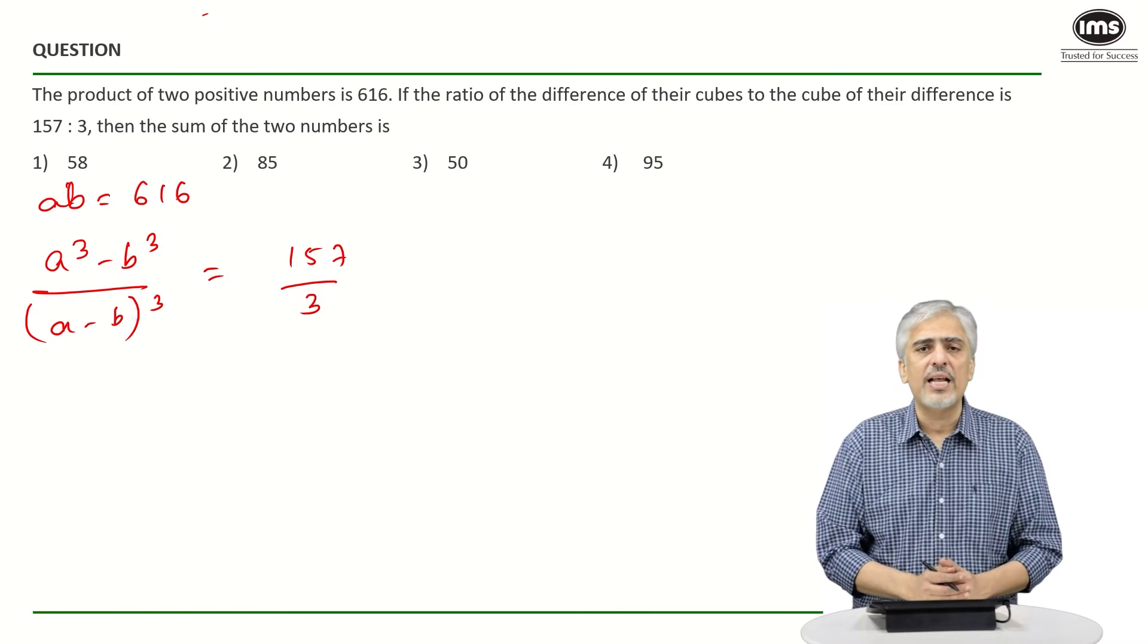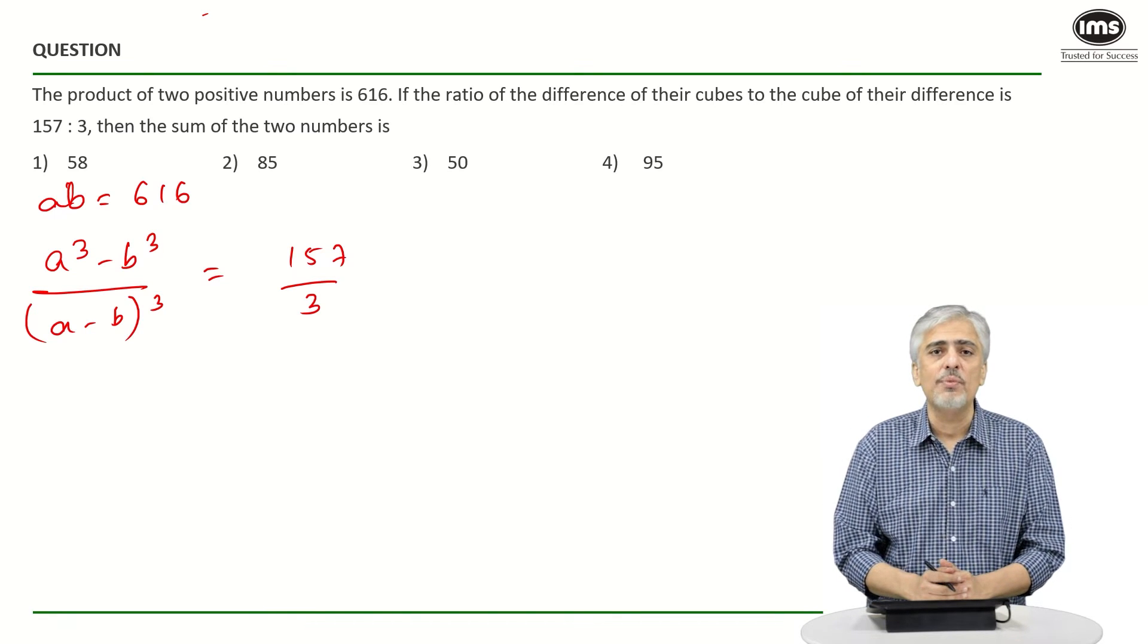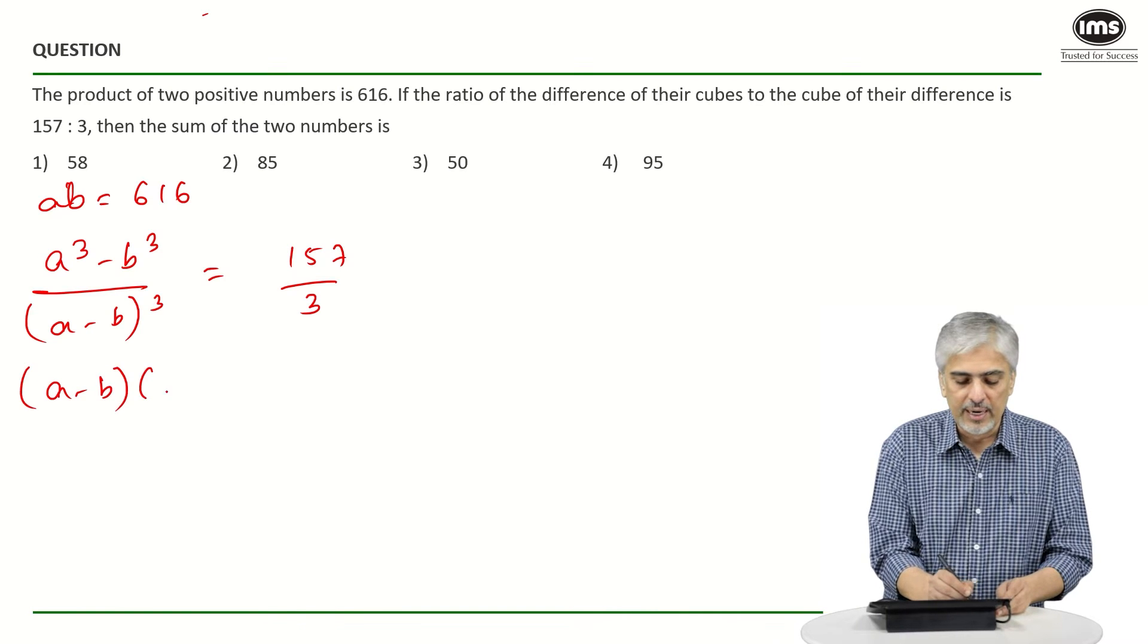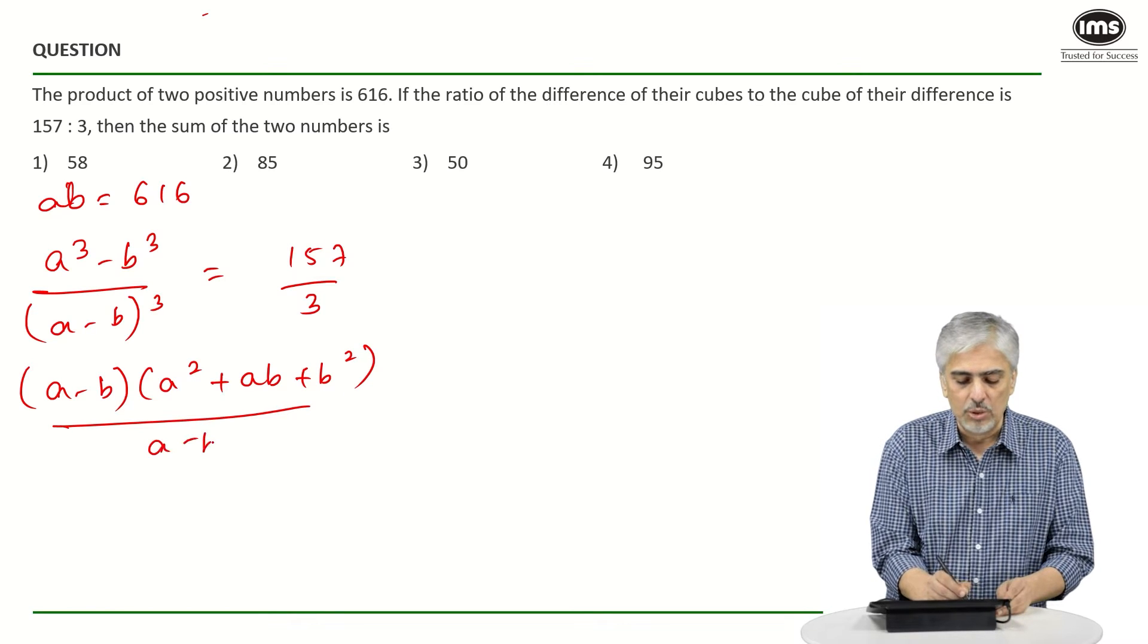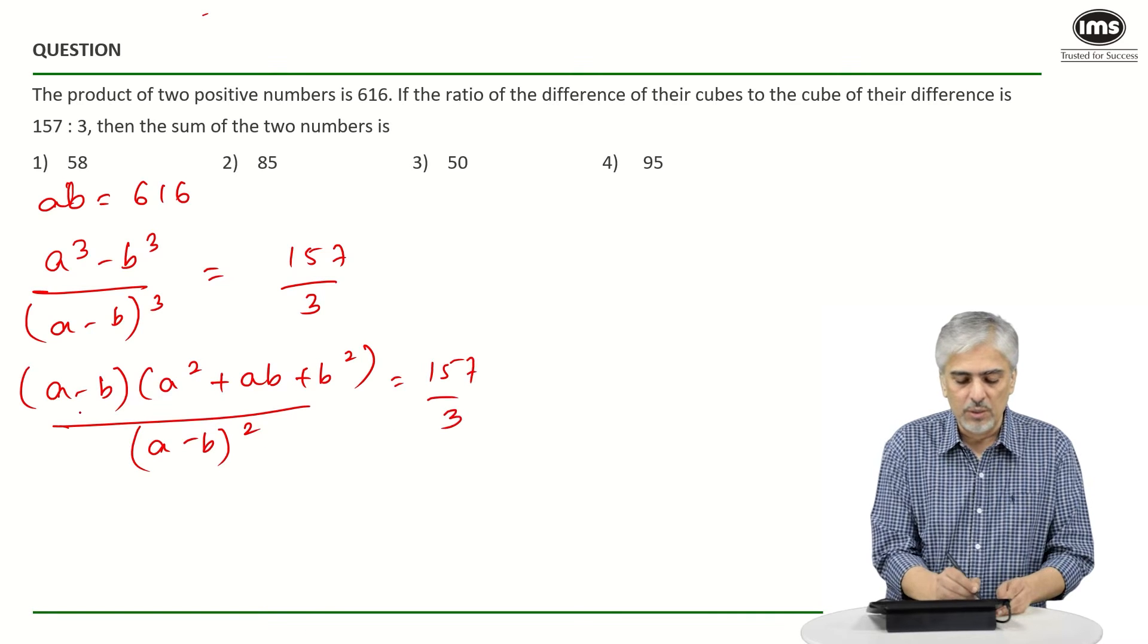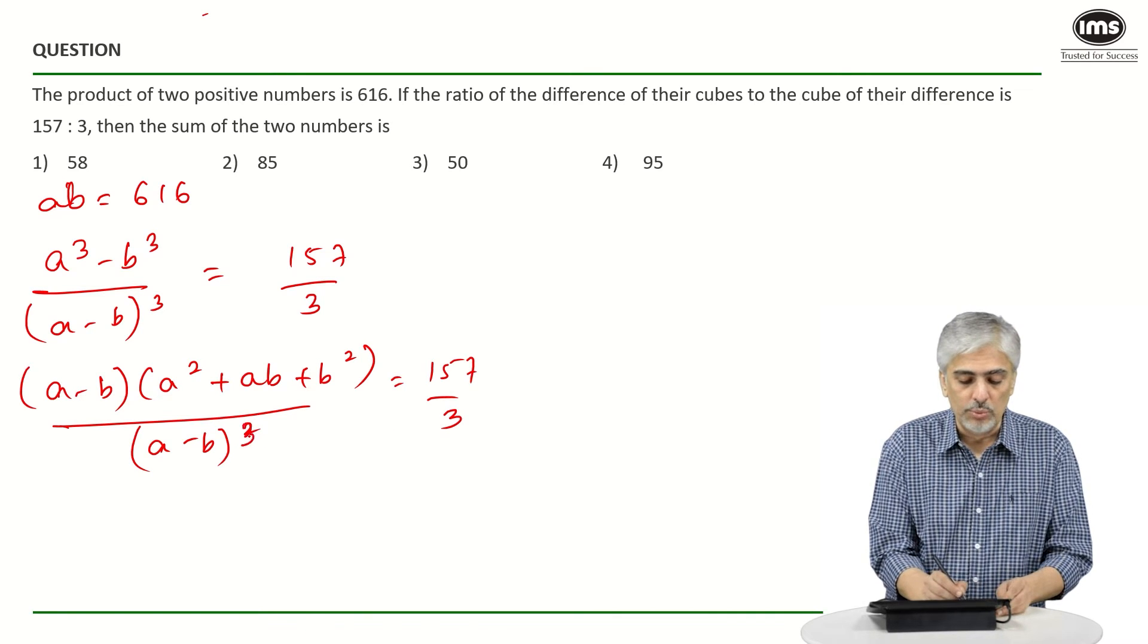Let's use simple algebra formulas. What is the formula for a³ minus b³? It's (a minus b) into (a² plus ab plus b²) upon (a minus b)³ is 157 upon 3. Oh sorry (a minus b)³ that is.